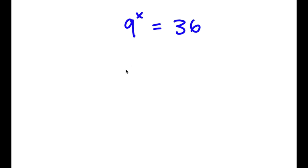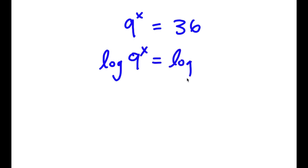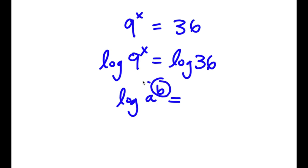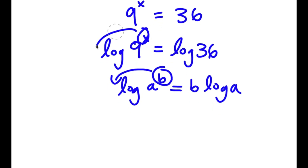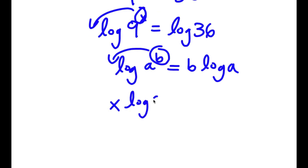In this problem, I have 9 to the power of x is equal to 36. What I'm first going to do is take the log on both sides. So I have log 9 to the power of x is equal to log 36. If I have something in the form log a to the power of b, I can move this exponent b to the front, so it equals b times log a. In this case, I can move x to the front, so now I have x times log 9 is equal to log 36.